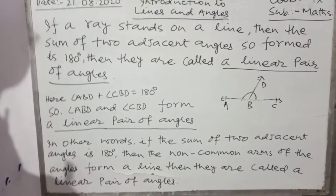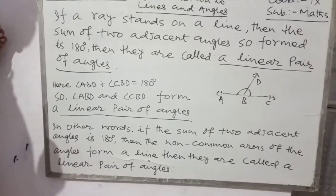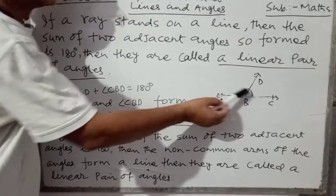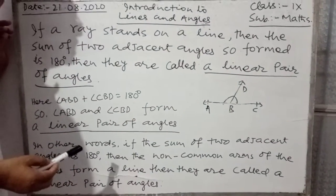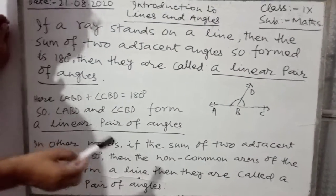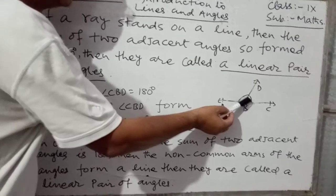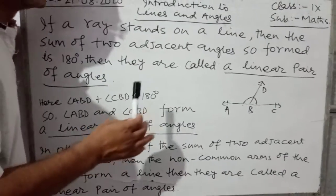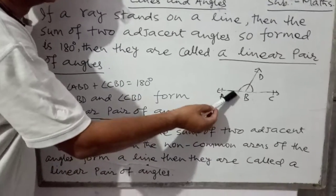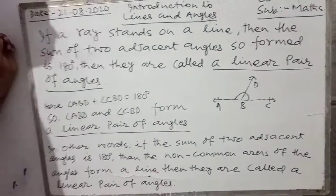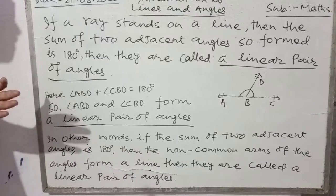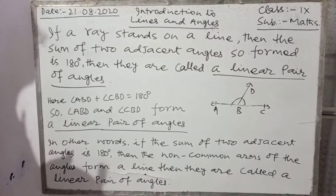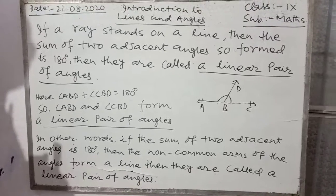Then they are called a linear pair of angles. This means that when the two adjacent angles are 180 degrees, then the two adjacent angles' non-common arms, here the non-common arms are AB and CB, they make a line. The two adjacent angles are linear pair of angles.